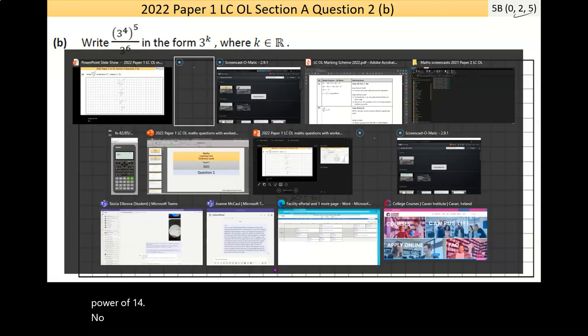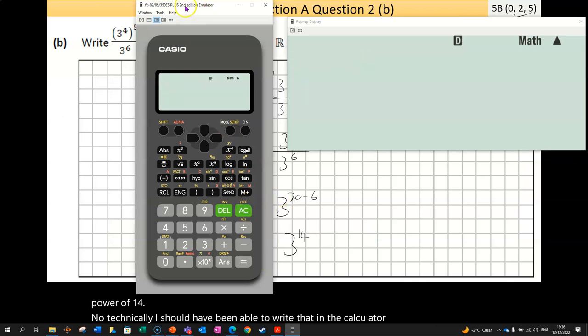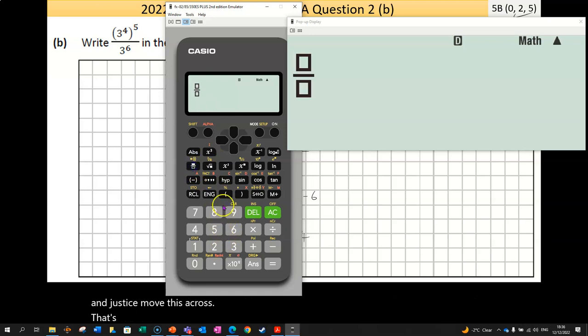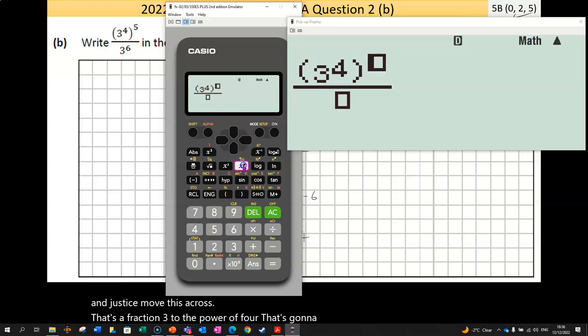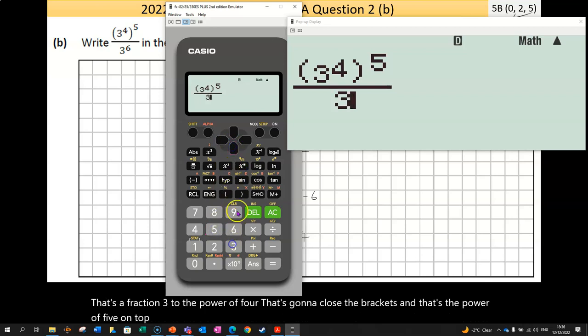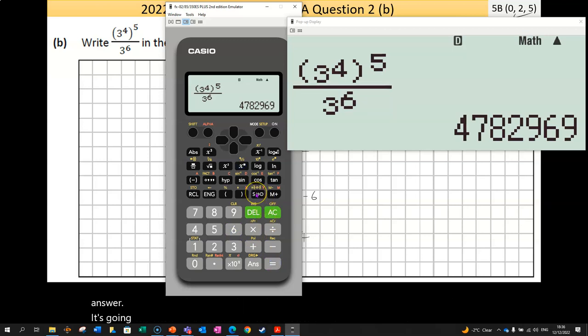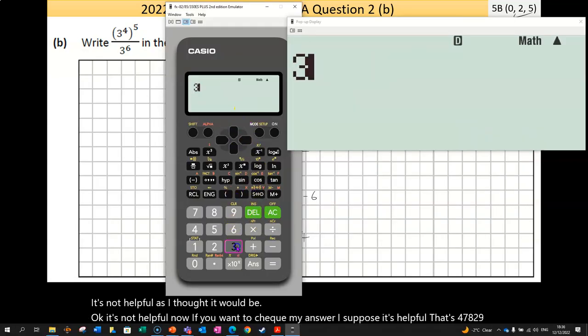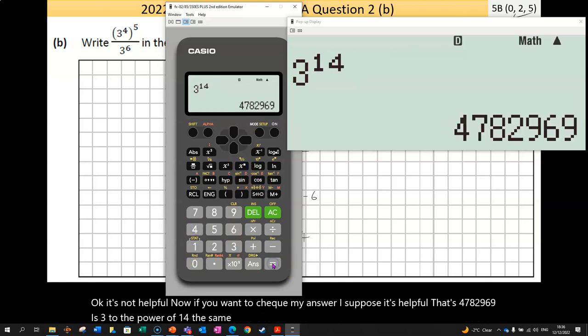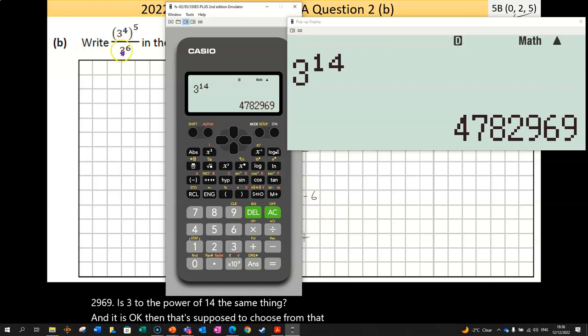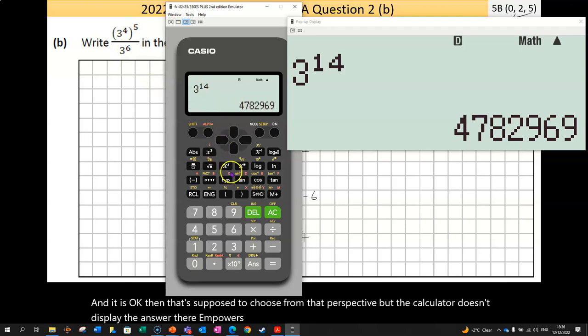Now, technically, I should have been able to write that in the calculator. So if I clear that off, that's a fraction 3 to the power of 4, and that's to the power of 5 on top. Then the bottom was 3 to the power of 6. This should give us the same answer. It's going decimal. It's not helpful as I thought it would be. If I want to check my answer, I suppose it's helpful. That's 4782969. Is 3 to the power of 14 the same thing? And it is. So, I suppose it's useful from that perspective. But the calculator doesn't display the answer there in powers.